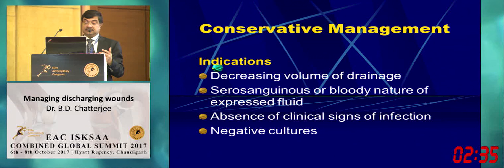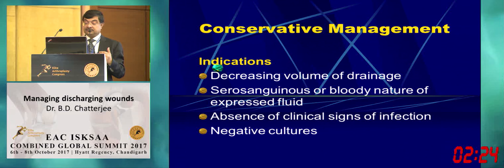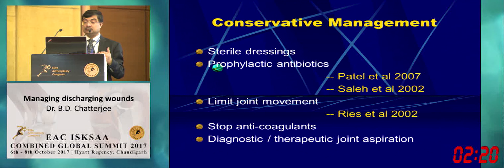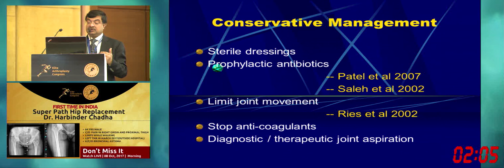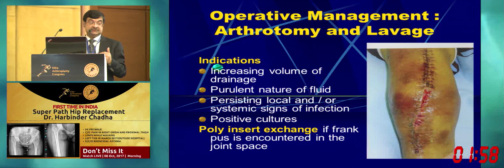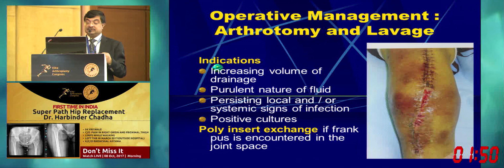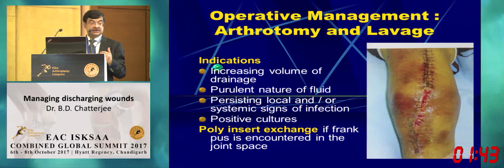Conservative management is appropriate when there is decreasing volume of drainage, the fluid remains serosanguinous or bloody, and there is absence of clinical infection signs with negative cultures. Conservative treatment: sterile dressings, prophylactic antibiotics, limit joint movement, stop anticoagulants, and aspirate the joint for diagnosis or decompression. Operative indications: increasing drainage volume, purulent fluid, persisting infection signs, positive cultures, or pus inside the joint — in which case thorough washout and poly exchange are required.